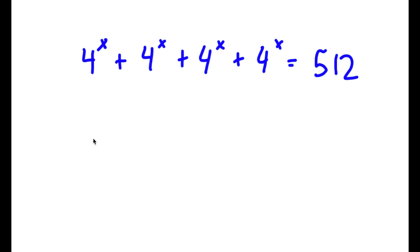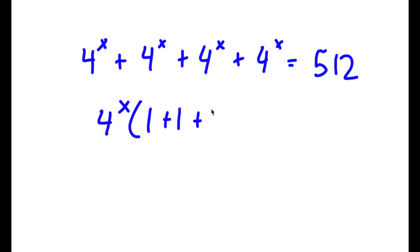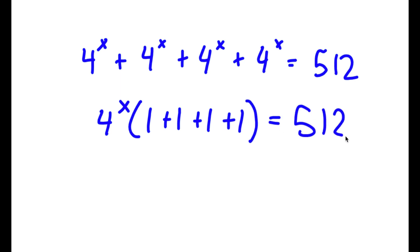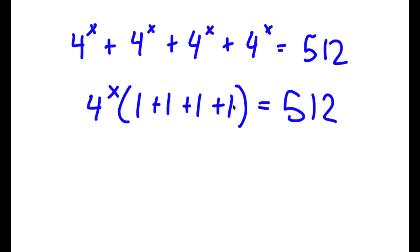To solve this problem, I'm going to first start by factoring out 4 to the power of x. So now I have 4 to the power of x times 1 plus 1 plus 1 plus 1, which equals 512. Now I'm going to rewrite 1 plus 1 plus 1 plus 1 as 4, so now I have 4 to the power of x times 4 is equal to 512.